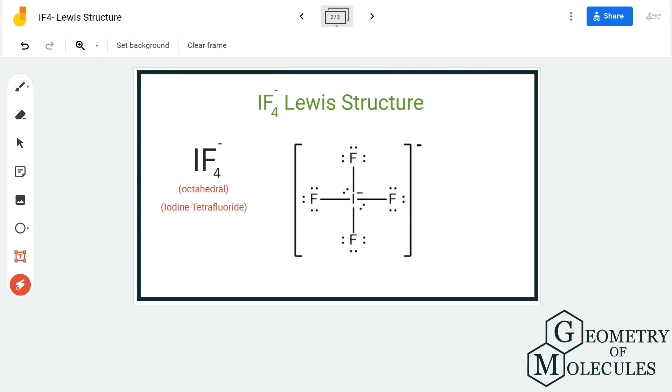So, whenever you are writing the Lewis structure for an ion, place brackets—close brackets like this—and mention the charge. If it is accepting electrons, it will have a negative charge. If it is giving away electrons, it will have a positive charge. Here, this is a negatively charged ion...